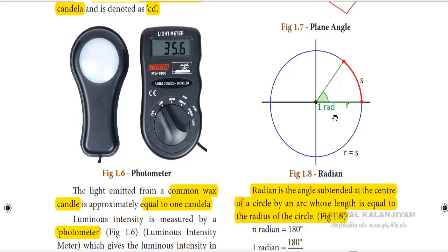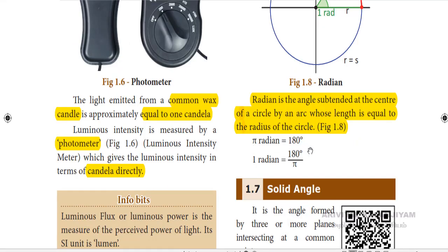In this circle, the radius is denoted as R. The arc length is denoted as S. When R is equal to S, that angle is called one radian. Pi radian is equal to 180 degrees, so one radian is equal to 180 degrees divided by pi.